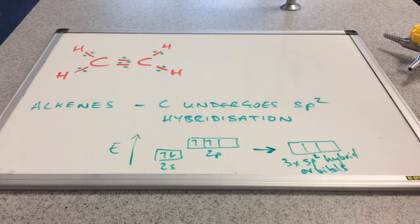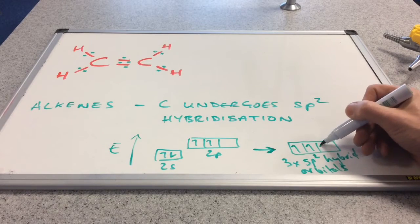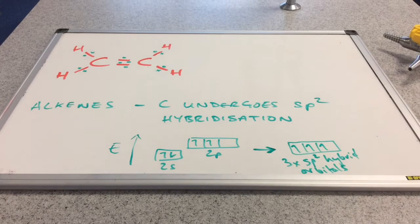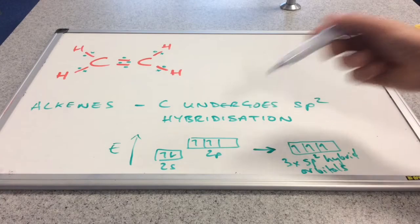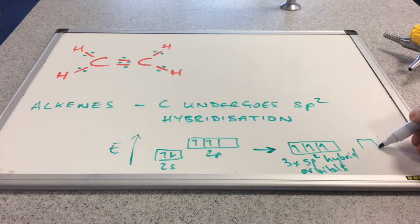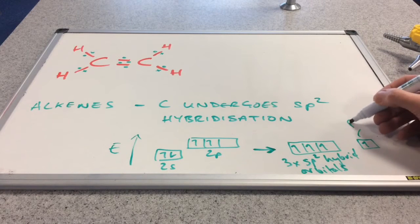And so three electrons will live in these, obviously unpaired. So the fourth electron is going to still be living in an unhybridised p orbital, and so if we represent that there, so this electron here is in a p orbital.